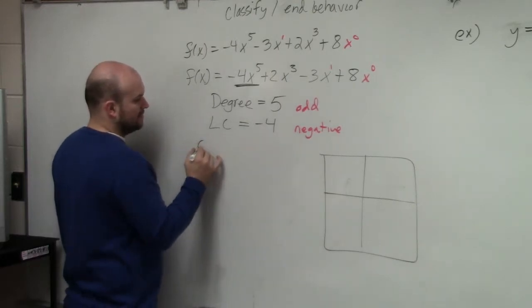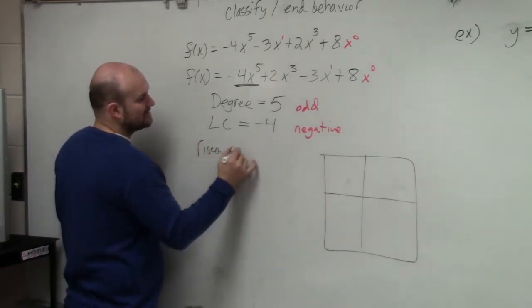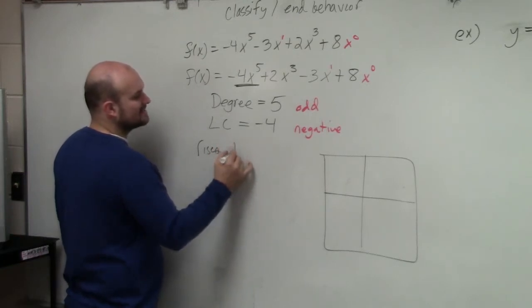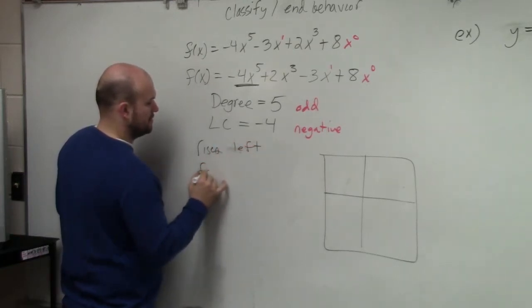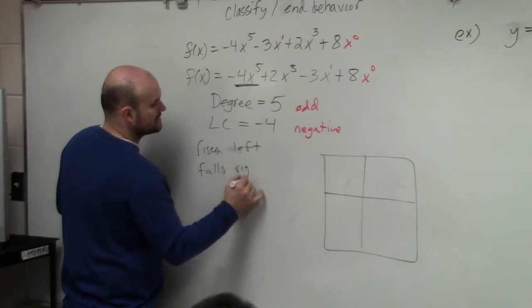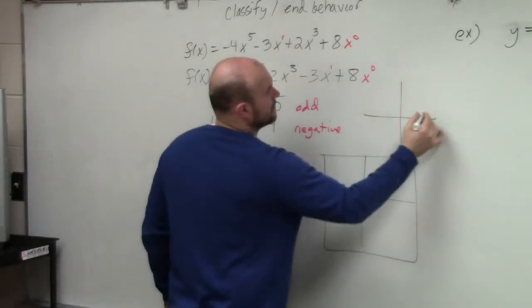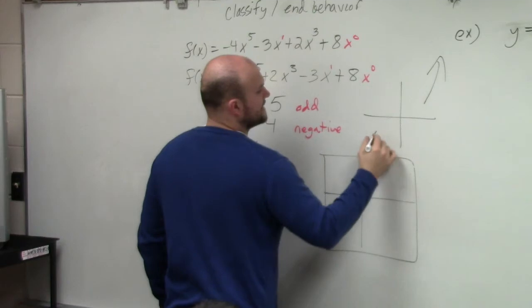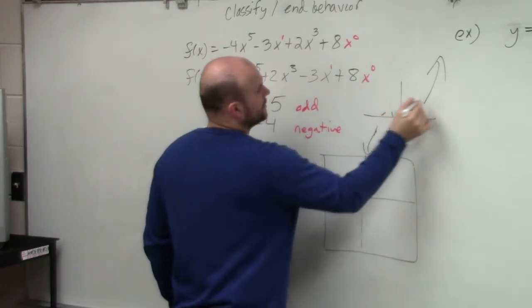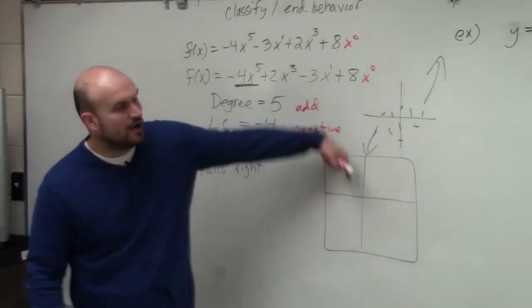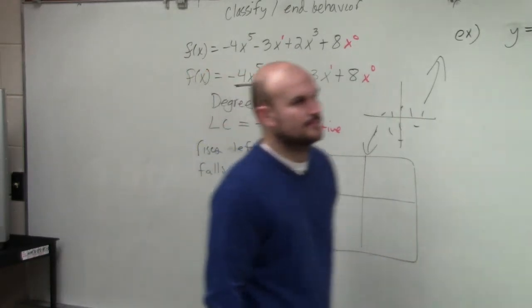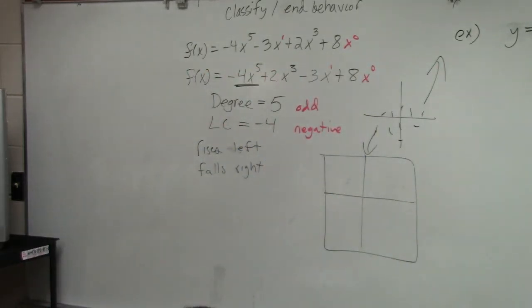Your graph rises right, I'm sorry, rises left, falls right. It's going to go up and down. We don't know what everything else in the middle is, but it's going to fall left, rise right. So that's how you do that one problem. Hopefully that's enough information to help you.